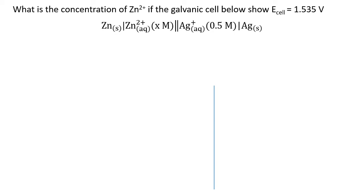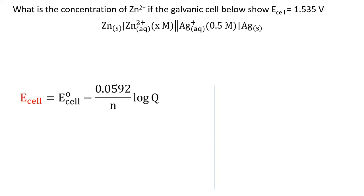Log Q gives minus 4. Substituting into the Nernst equation with n = 2 and E°_cell from the problem, we calculate E_cell. Depending on the concentration of your solution, the E_cell measured from the multimeter may be different from the standard value.